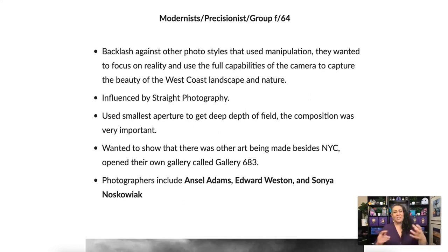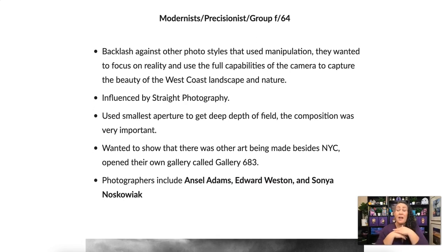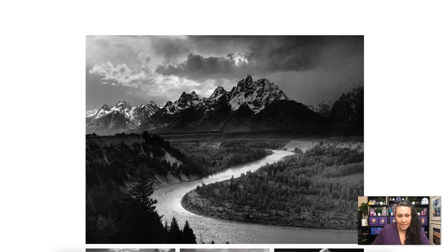We just saw images where photos were manipulated in some way — cut up, using mirrors, or whatever. Next comes the modernists, the precisionists, or Group f64. F64 is exactly what you think — we've talked about going up to f/22, but some older cameras can go down to f/64, which is a tiny aperture with a crazy amount of depth of field. This was a backlash against manipulation — going back to pure straight photography. This is where we get people like Ansel Adams.